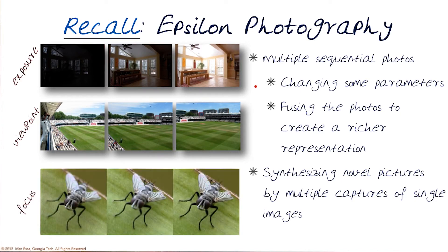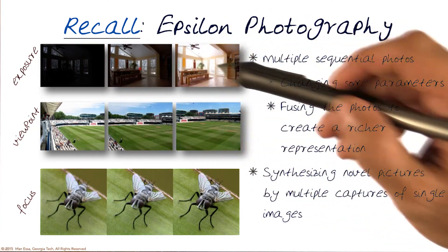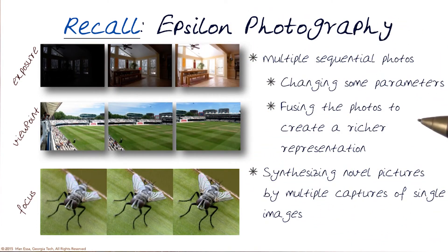Many other examples of this exist. Here is an example of being able to capture a focus stack and then generate a new image that basically has no focus variations. Or sometimes we can controllably change the variation. In epsilon photography, the goal was to capture all of those images — actually capture multiple images — and then use those multiple images to generate a newer image, or perhaps even a controllable image that could be generated on the fly.